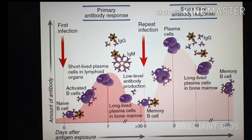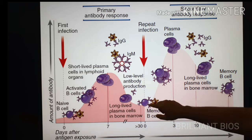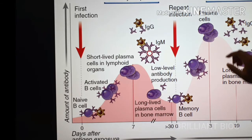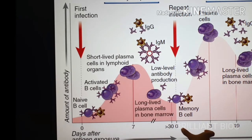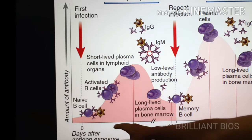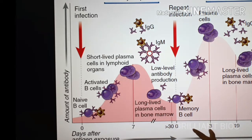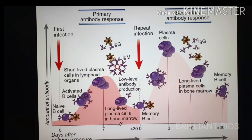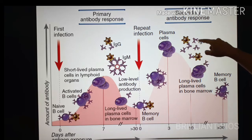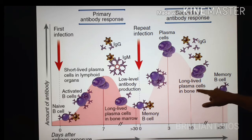One interesting fact is that memory cells respond very vigorously and fast. After the second infection, the antibody titer goes very high and the time to reach that peak is very short — in the first infection it was seven days, but now it is only three days. Plasma cells produce antibody that eliminates the pathogen, and long-lived plasma cells again reside in the bone marrow.